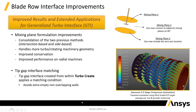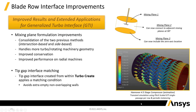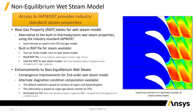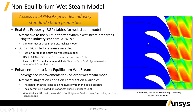Here we've got a multi-stage compressor running — it could be running the full geometry or just periodic instances, and in this case it's running periodic instances. If you're running steam turbines, there's an improvement where you can now use the international standard for water to create RGP tables, which give you properties of non-equilibrium wet steam. There are a couple of built-in models plus this new model, giving you the same capabilities in Fluent as you have in CFX.